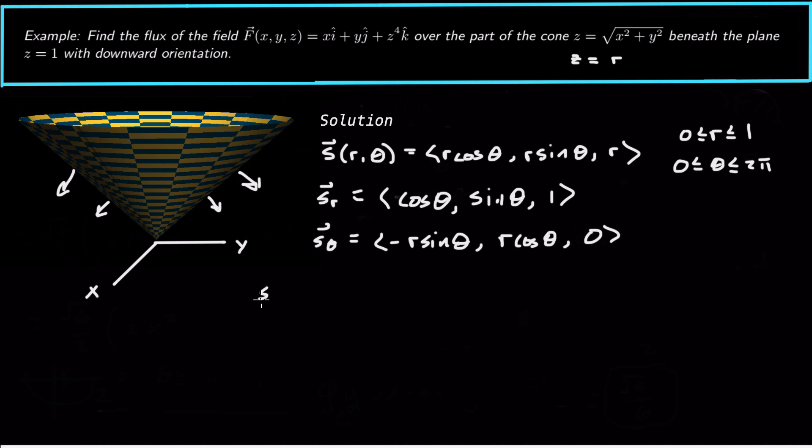So s r cross s theta, take the cross product. That's going to be i hat, it's going to be 0 minus r cosine theta, so negative r cosine theta. And then j hat is going to be negative, but then parentheses 0 minus negative, so it's still negative, negative r sine theta. So just be careful in this cross product.